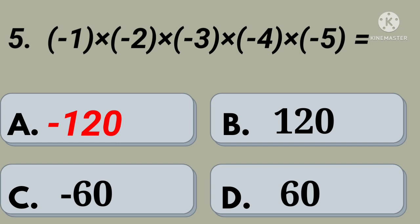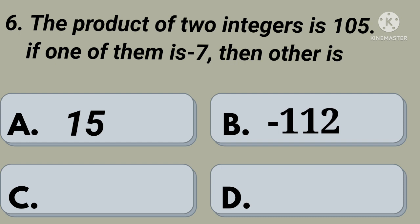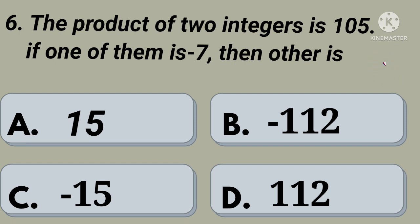Sixth question: the product of two integers is 145. If one of them is minus 7, then the other is. Option A: 15, option B: minus 112, option C: minus 15, option D: 112. Your time starts now. Right, option C: minus 15.